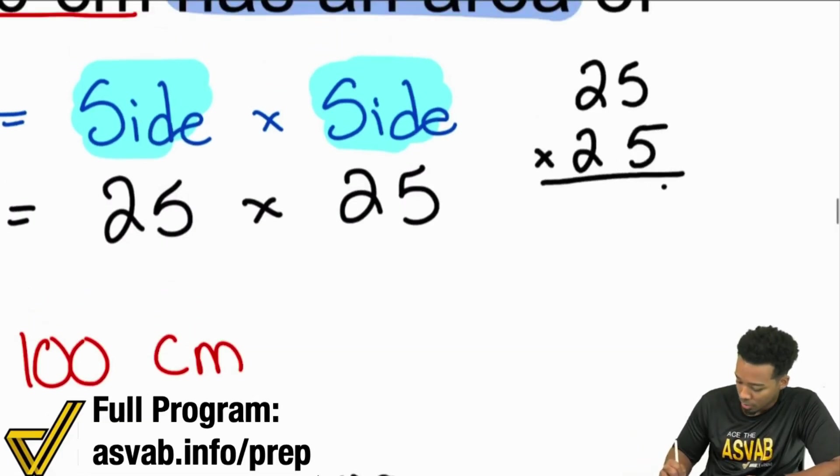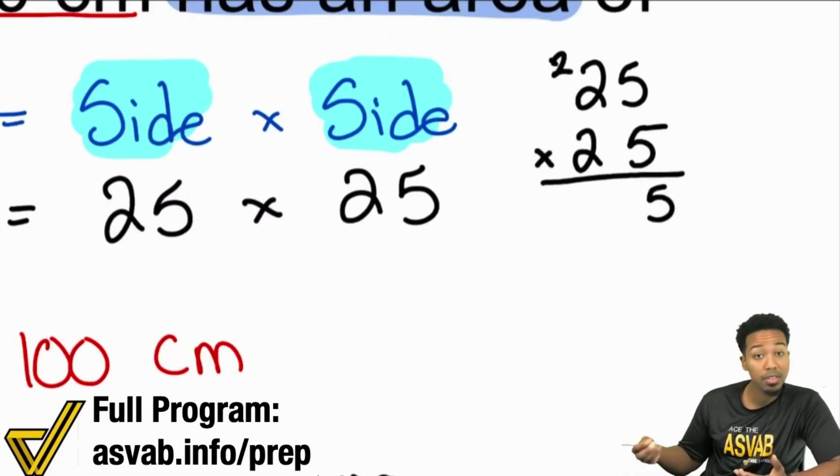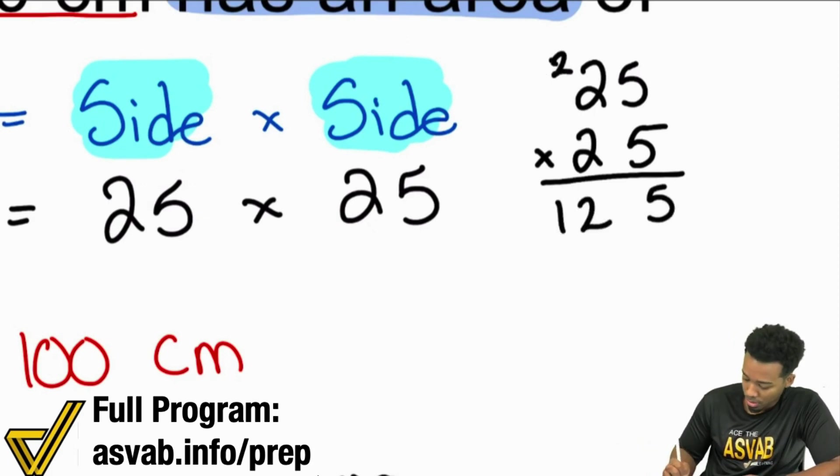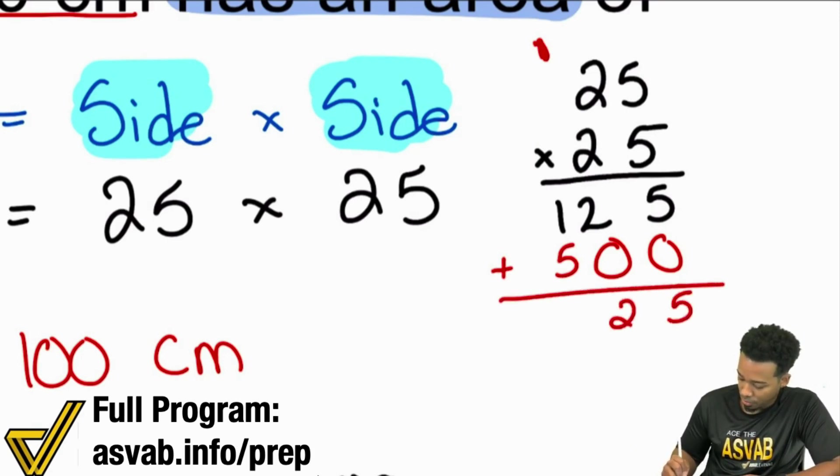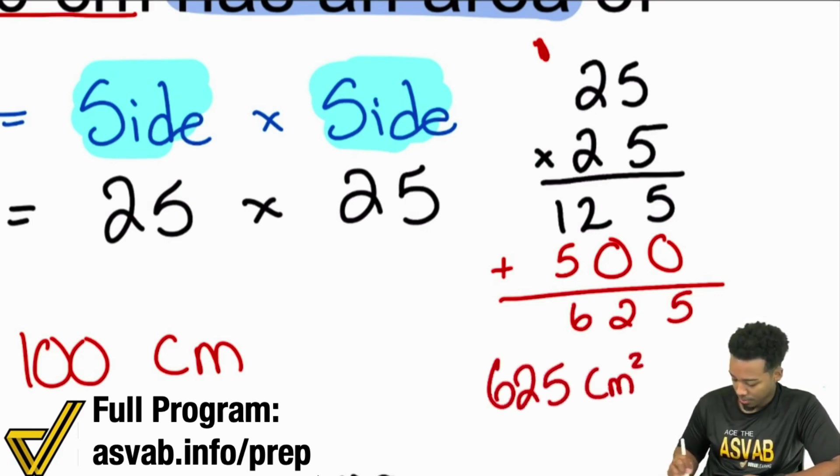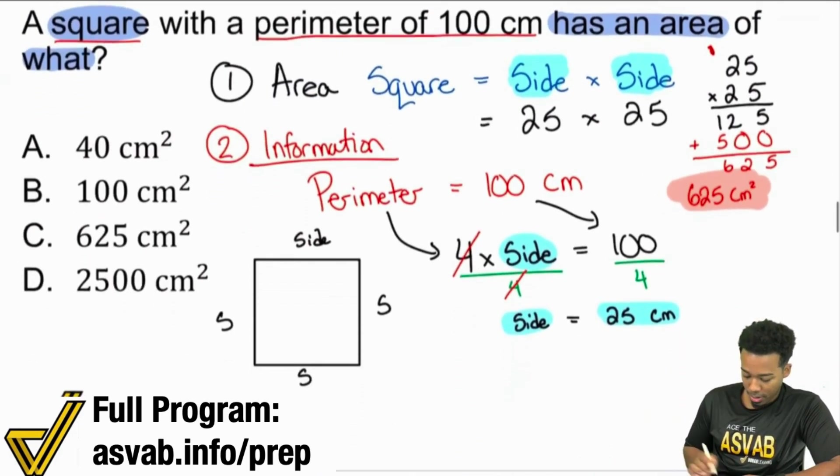So, 5 times 5 is 25. Carry the 2. 2 times 5 is 10. Carry the 2 is 12. Now, up next, we're going to go ahead and take care of the other side here. So, we're going to drop that 0, and now we have 5 times 2. That's going to be 10. 2 times 2. 4 plus 1 is 5. So, we're going to add that together. We're going to have 5 to 6. So, we're going to have 625 square centimeters. Just like that. And so, boom. There it is. Our answer is C.